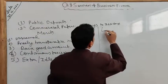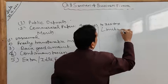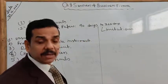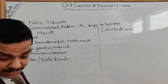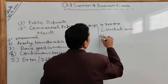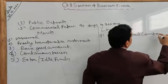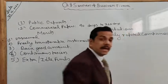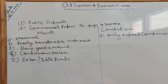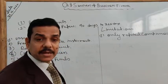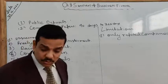Now the limitations of commercial paper: every source has both merits and limitations. The first limitation is that only reputed companies can deal in commercial papers. As the loan is totally unsecured, only companies of high repute can deal in commercial papers. New and moderately rated firms are not in a position to raise funds by this method — newly established companies or those with a lower track record cannot issue commercial paper.